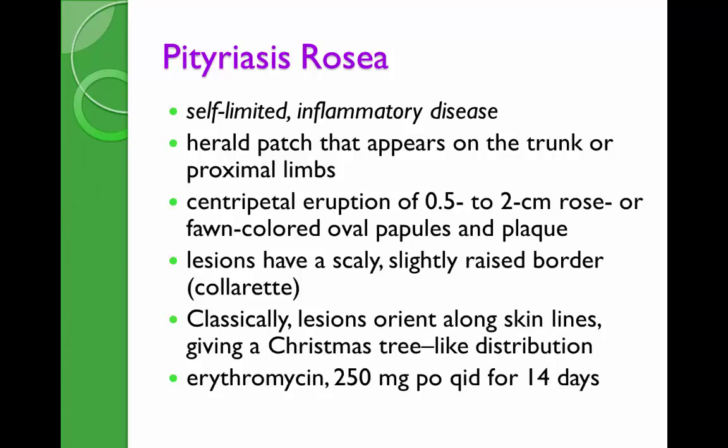The lesions have scaly, slightly raised borders resembling a collarette and look similar to ringworm or tinea corporis, but a KOH mount does not show hyphae. Patients have pruritus that is occasionally severe. The rose or salmon color is pathognomonic. Classically, lesions orient along skin lines giving a Christmas tree distribution — also pathognomonic. Patients may have a prodrome of malaise and headache before the rash.